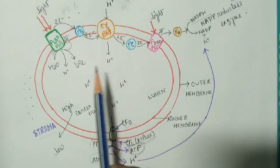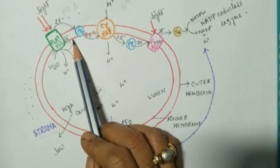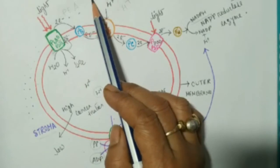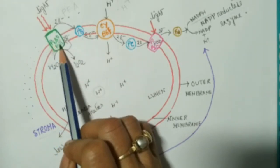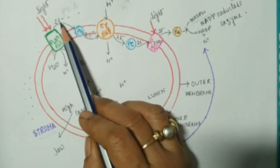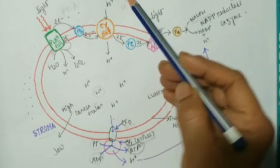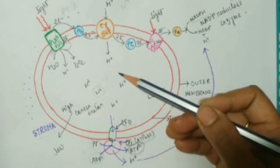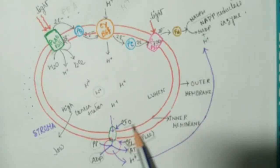So this is the whole process of chemiosmotic hypothesis. To summarize: splitting of water produces oxygen, protons, and electrons; electrons go to photosystem II; protons remain in the lumen. Photosystem II absorbs light, electrons transport downhill, and the cytochrome complex absorbs protons from stroma and releases them into the lumen, creating a proton gradient. Protons then move back to the stroma through the proton pump with CF0 and CF1 components, driving ATP synthesis.